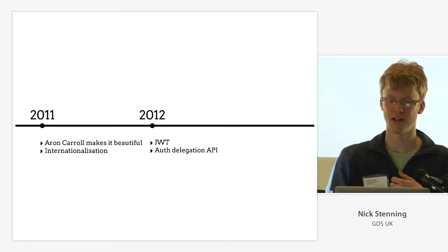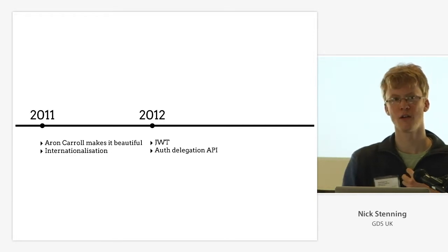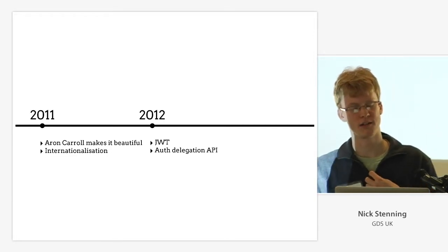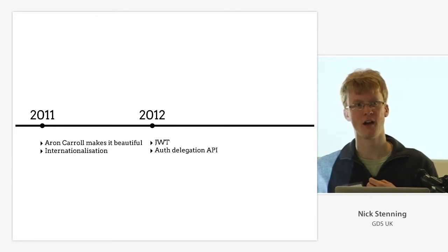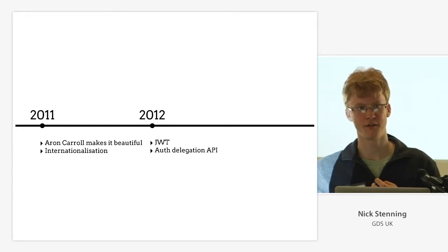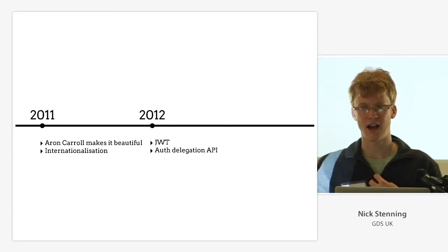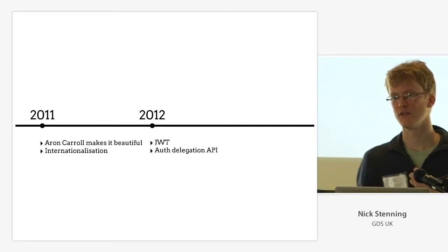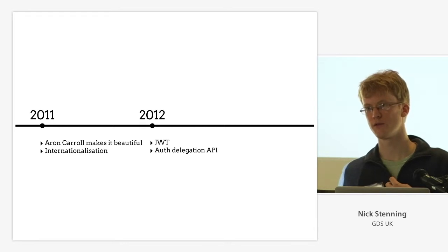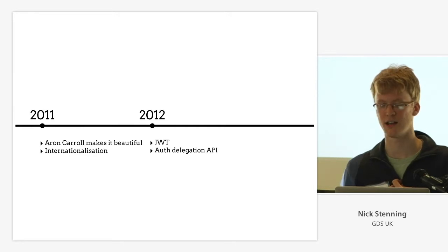But throughout 2011 and 2012, an awful lot happened to Annotator. The OKF hired a chap called Aaron Carroll, who actually knew what he was doing. He made the thing look half-decent and have a half-decent interaction model. It has some support for internationalization of the user interface, which for those of you who have tried to do internationalization in JavaScript, is actually a pretty big deal — it's a pain.